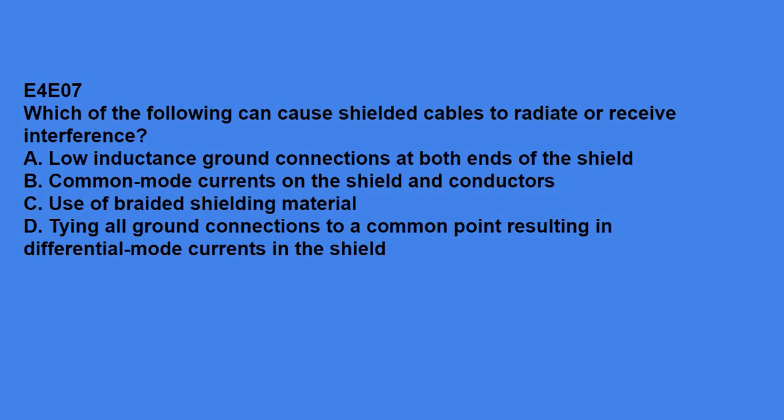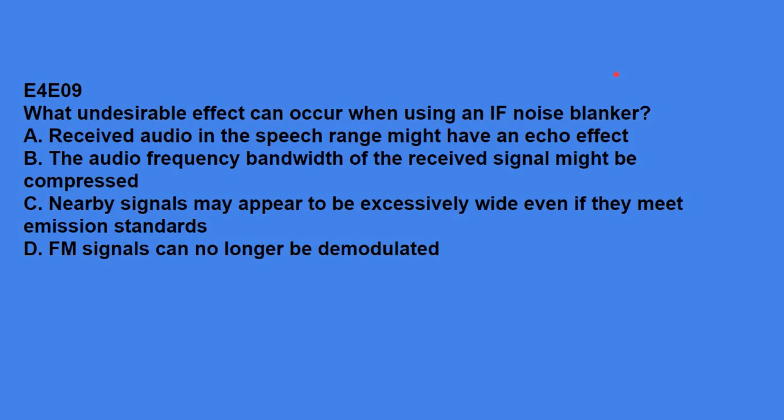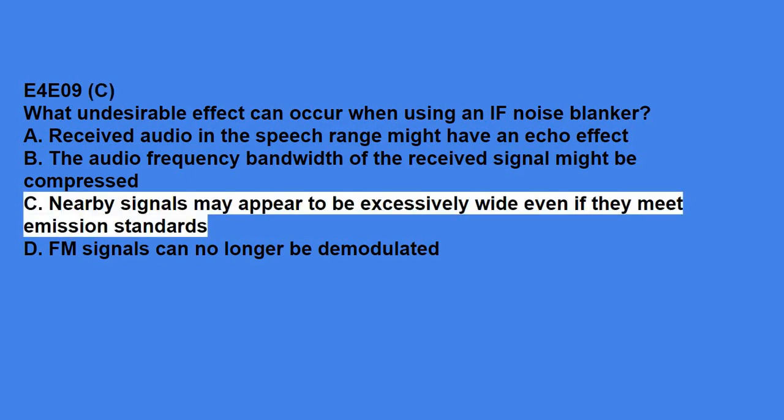E4E07, which of the following can cause shielded cables to radiate or receive interference? Common mode currents on the shield and conductors. E4E08, what current flows equally on all conductors of an unshielded multi-conductor cable? Answer is, common mode current. E4E09, what undesirable effect can occur when using an IF noise blanker? Answer is, nearby signals may appear to be excessively wide, even if they meet emission standards.